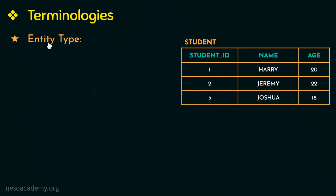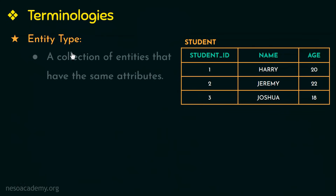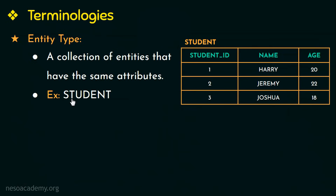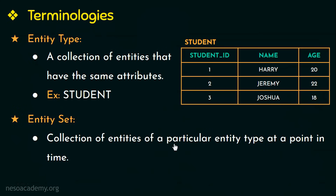The next terminology is entity type. An entity type is a collection of entities that have the same attributes. For example, the entity type student includes entities like Harry, Jeremy, and Joshua, who share the same attributes such as age. An entity set, on the other hand, is a collection of entities of a particular entity type at a point in time. For example, all students with age between 19 and 23 at a given point in time form an entity set.